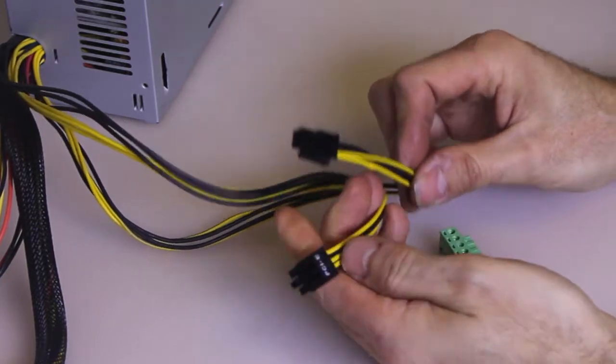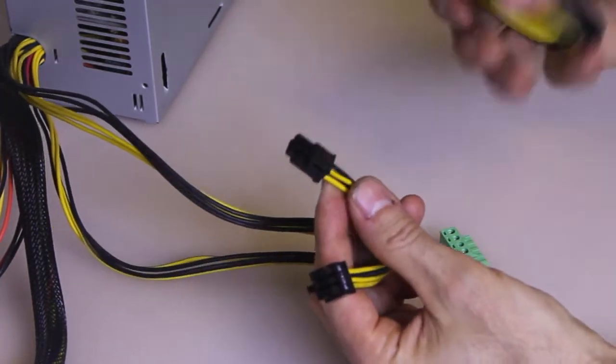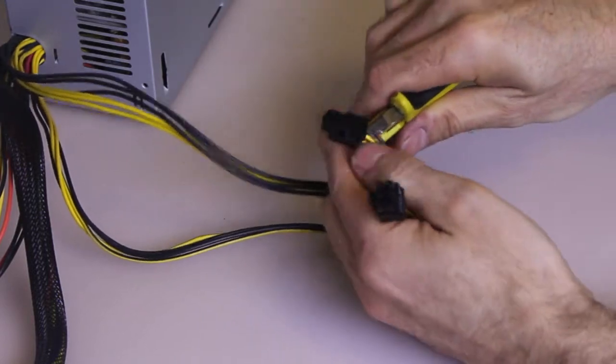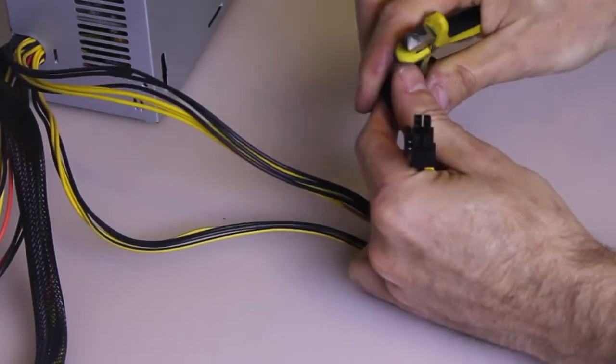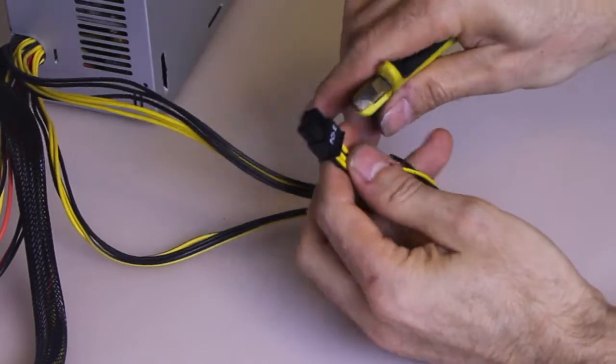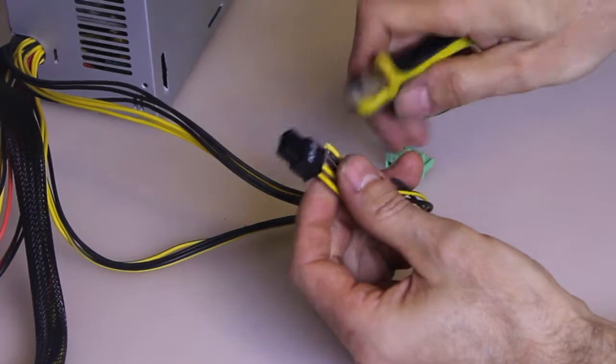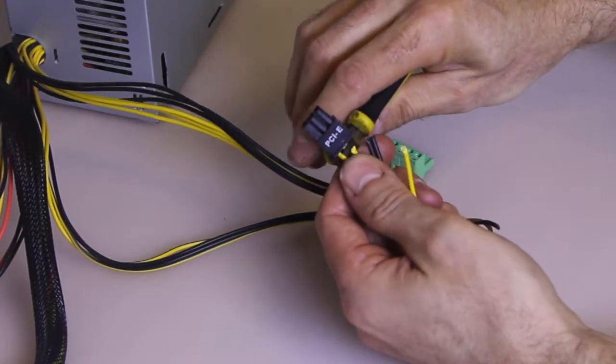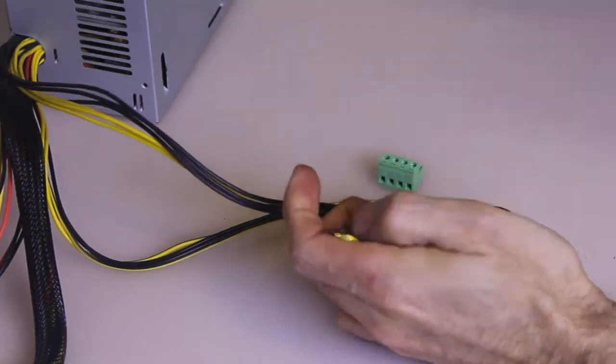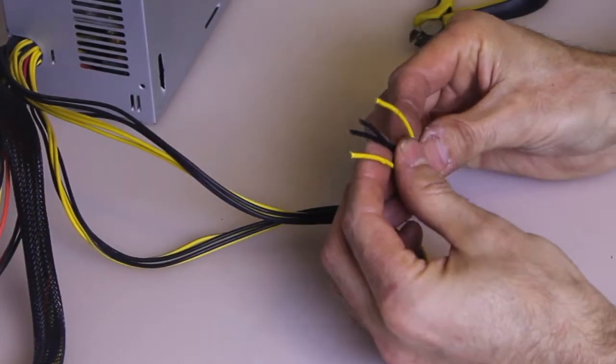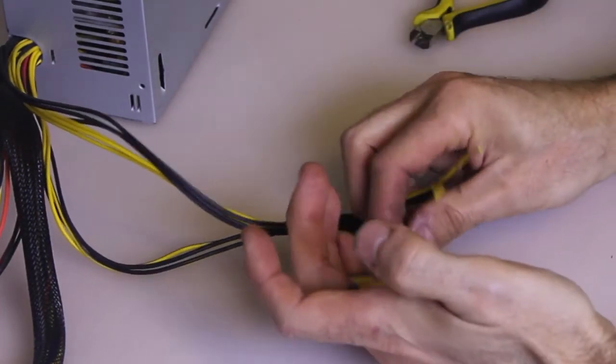And we're just going to chop off the connectors and use the wires. So I'm going to end up with 5 wires. We're going to use 4 pairs for this connector and one pair for the fan, because we're going to run a couple of fans off of the other pair.